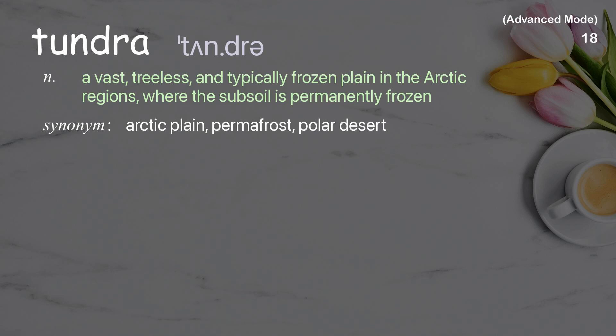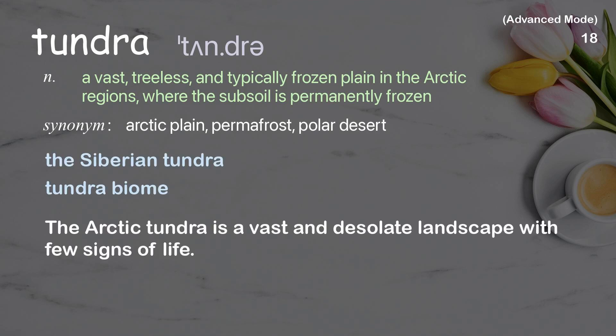Tundra: A vast, treeless, and typically frozen plain in the Arctic regions, where the subsoil is permanently frozen. Examples: the Siberian tundra, tundra biome. The Arctic tundra is a vast and desolate landscape with few signs of life.